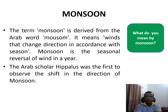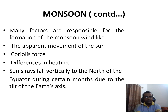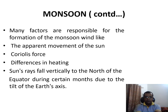The Arab scholar Hippalas was the first to observe the shift in the direction of monsoon. The obvious reason for the monsoon is that the sun rises vertically to the north of the equator during certain months due to the tilt of the Earth's axis.